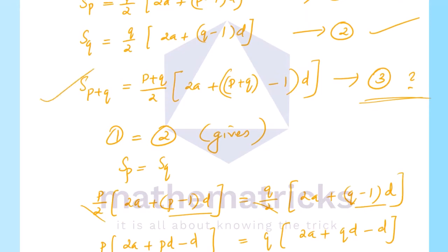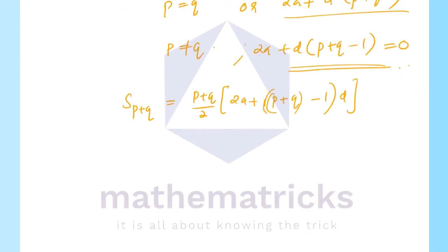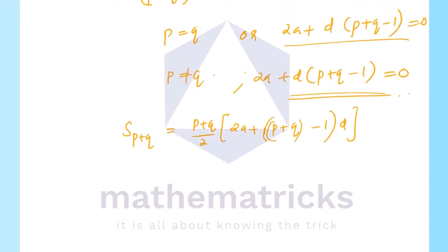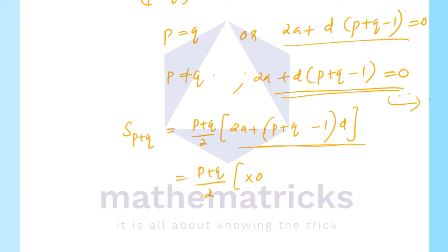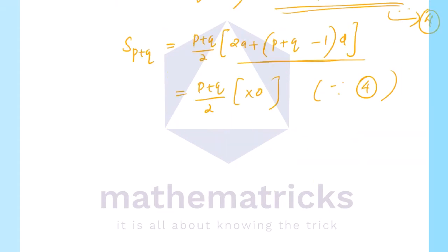For S(p+q): S(p+q) = (p+q)/2 into [2a + d(p+q-1)]. Since 2a + d(p+q-1) = 0, the bracket equals 0. This times will be fully 0. Therefore S(p+q) = 0. That is, the sum of the first (p+q) terms equals 0.